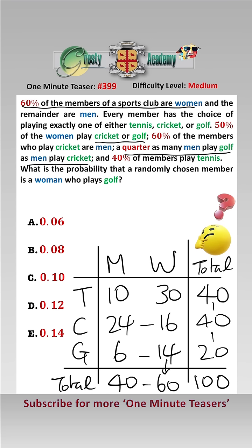So we can now answer the question, the probability that a randomly chosen member is a woman who plays golf is 0.14, which is answer E.